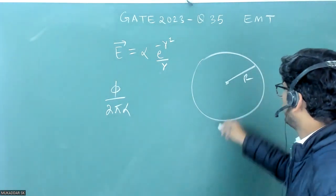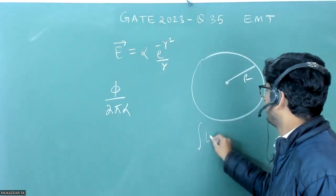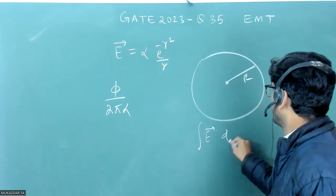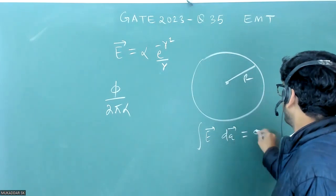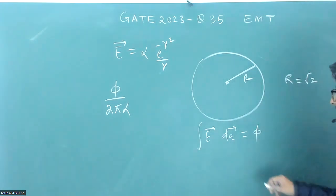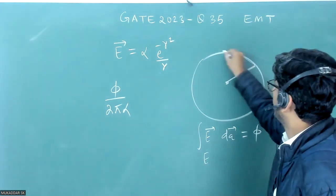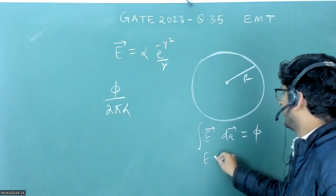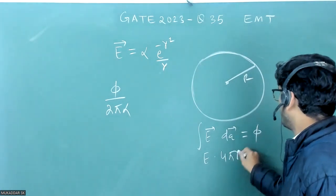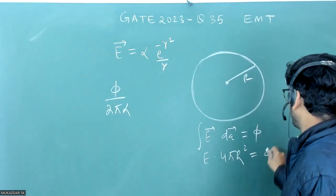If I want to calculate flux, what I will do, integral E dot dA will be equal to flux. And this will be E. E will be constant at all these points and into 4 pi R square is equal to phi.